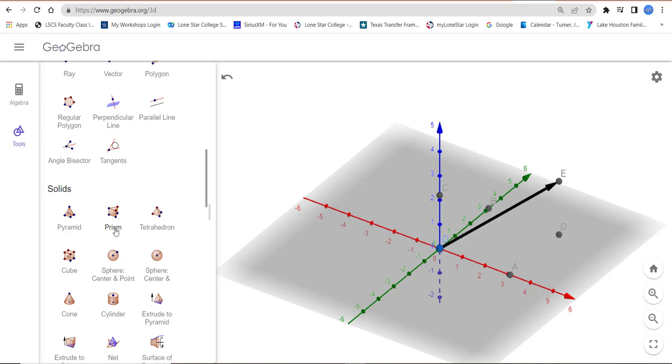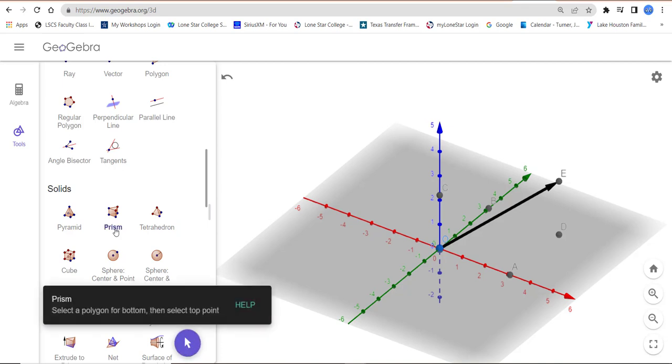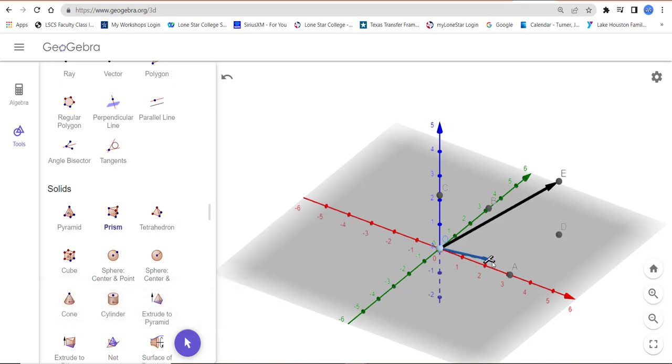For this one, we're going to define a two-dimensional surface. So I'm going to go around on the x, y plane. I'll grab this box, and then once I complete that loop, I'm done with my two-dimensional area. The third click is going to be bringing it up to the top.